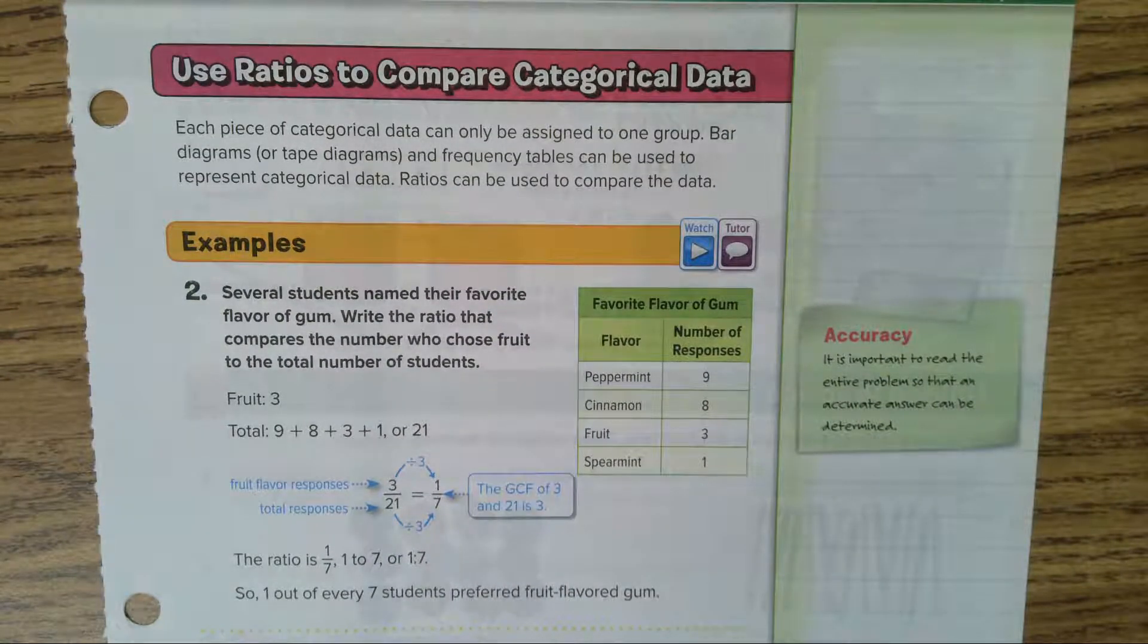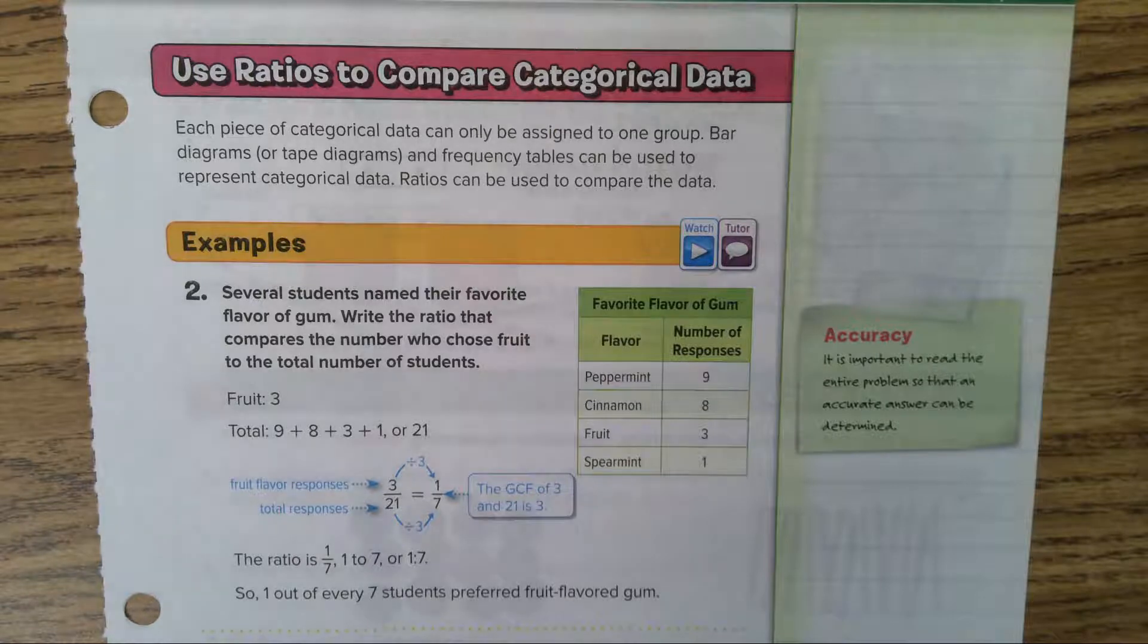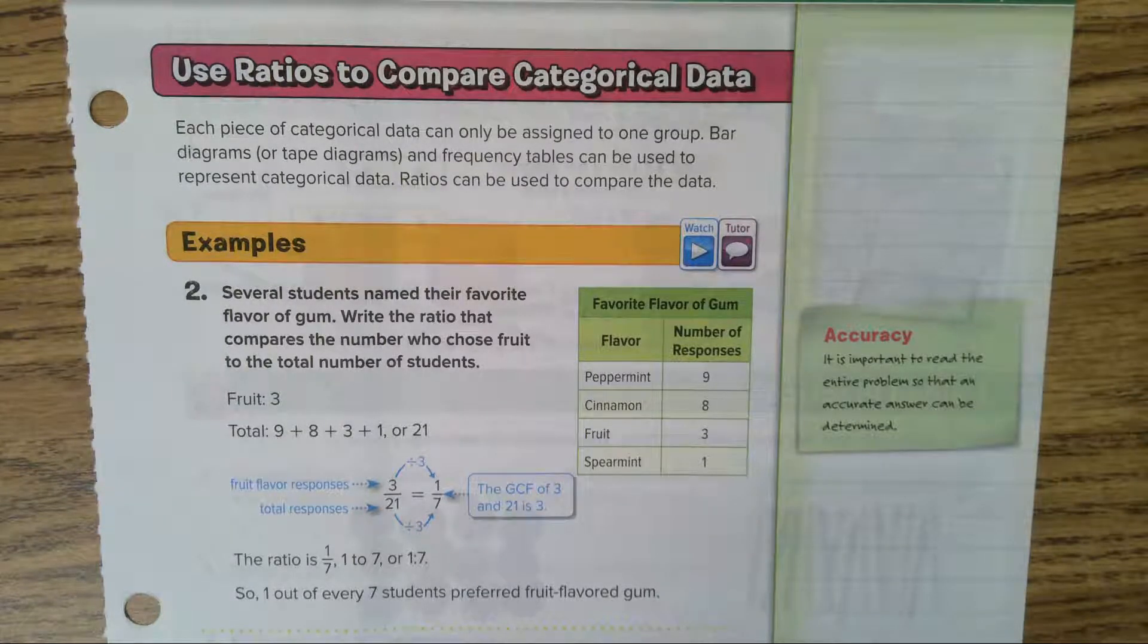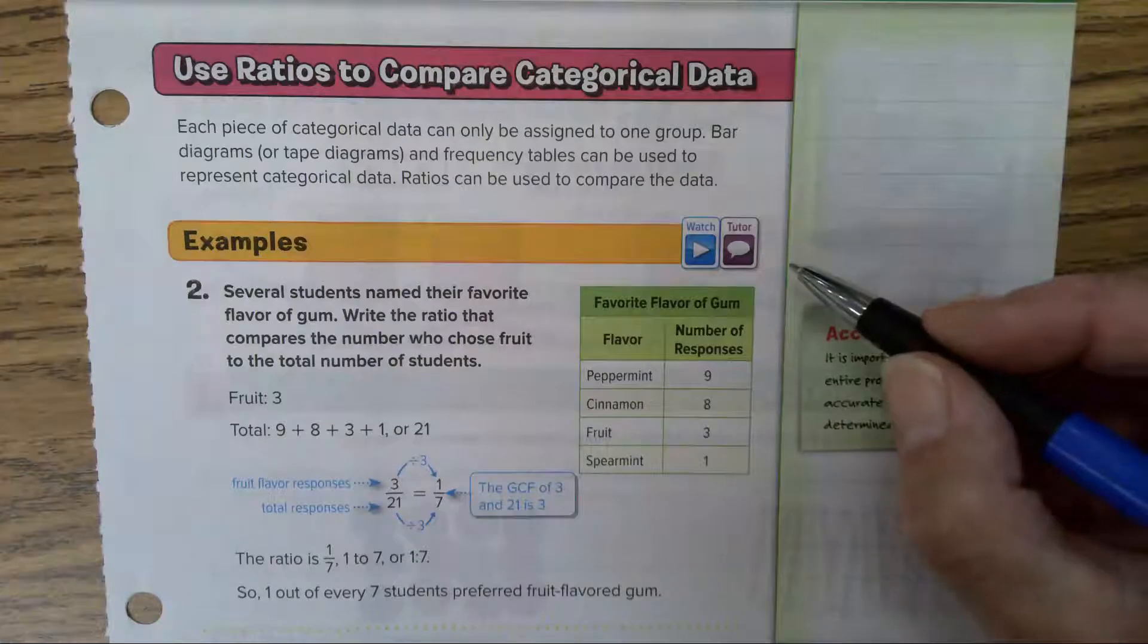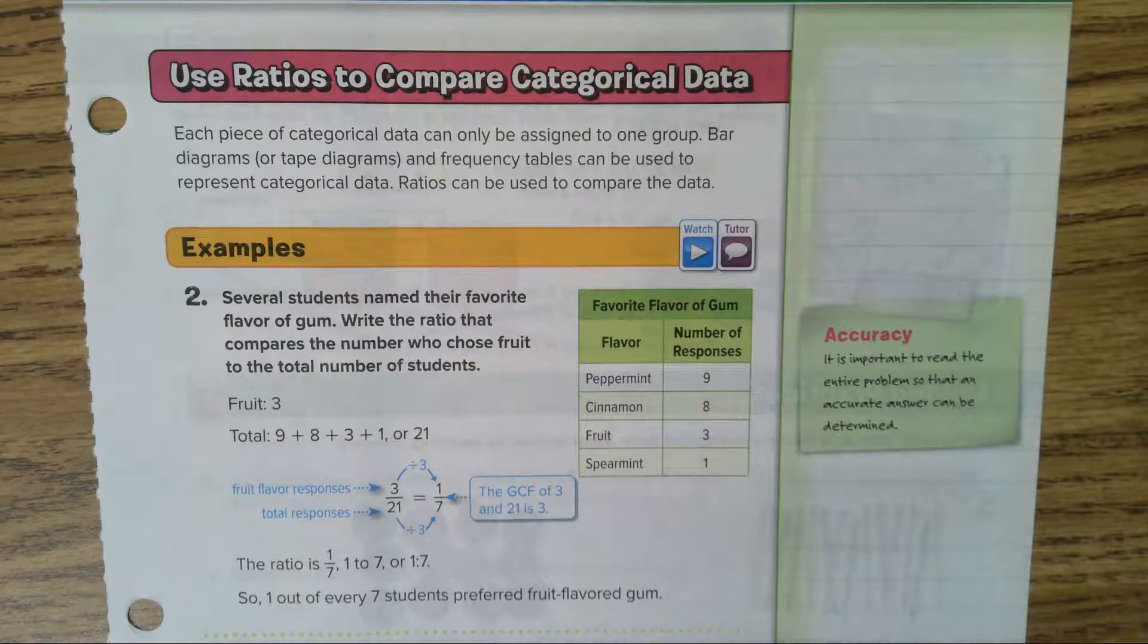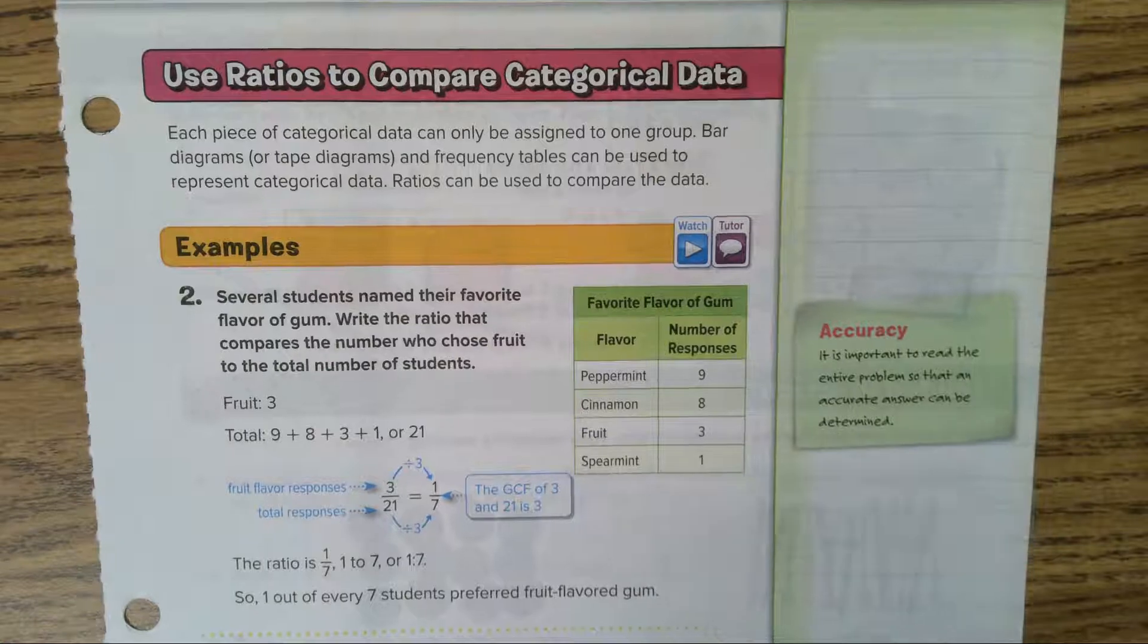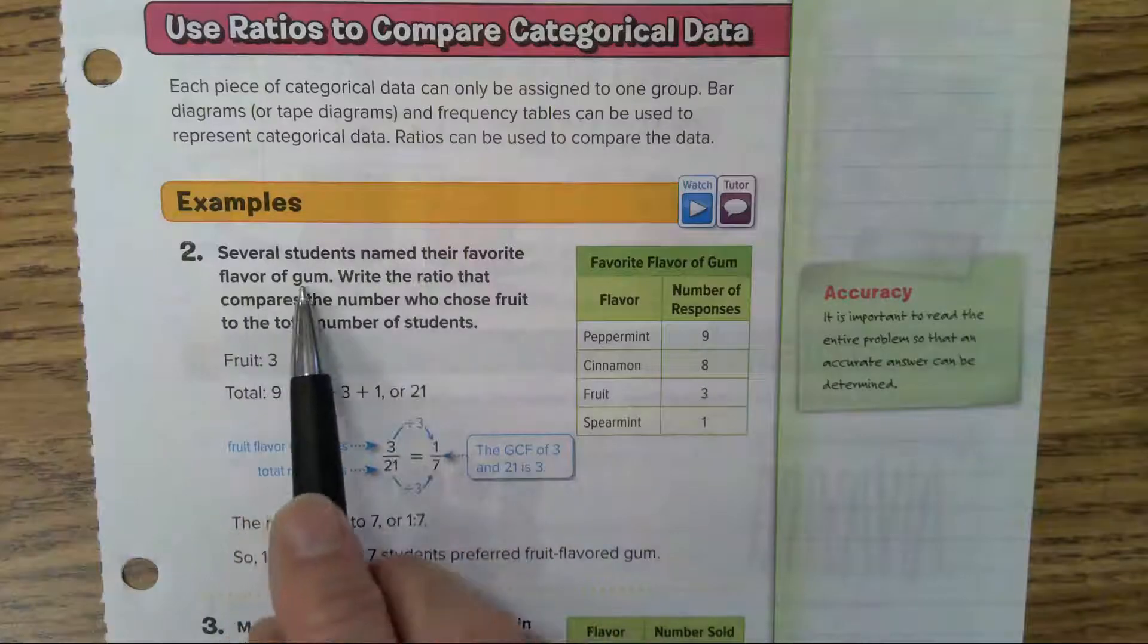Page 21. Use ratios to compare categorical data. Each piece of categorical data can be assigned to one group. Bar diagrams or tape diagrams and frequency tables can be used to represent categorical data. Ratios can be used to compare the data. If you are using your ebook, you can click on the tutor and the book will do a little tutoring session for you.